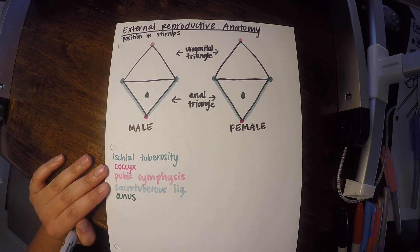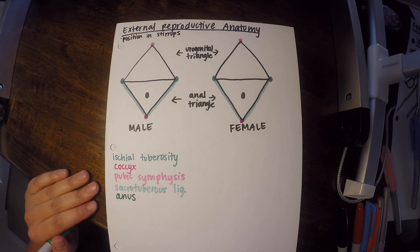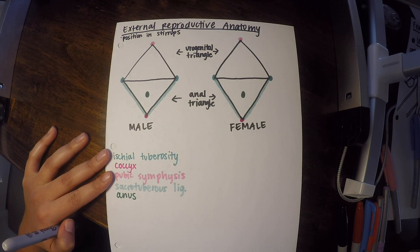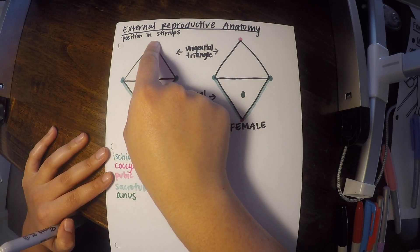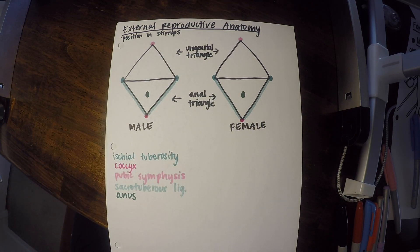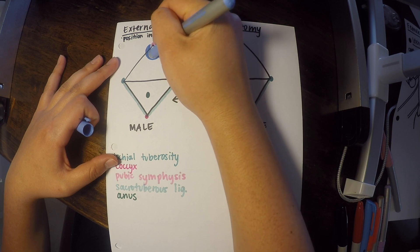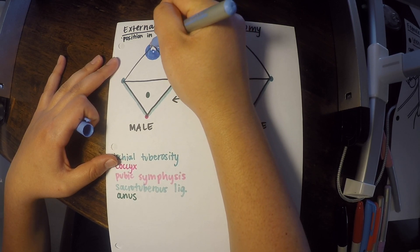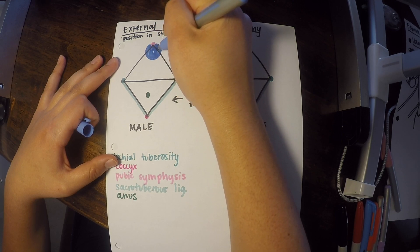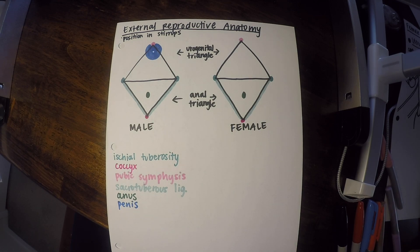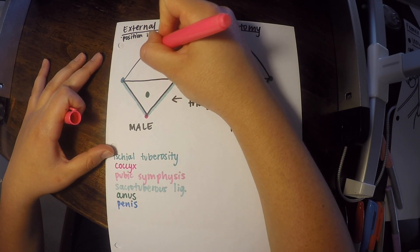For the male urogenital triangle, at the top near the pubic symphysis, we're going to have the penis and the penile urethra.